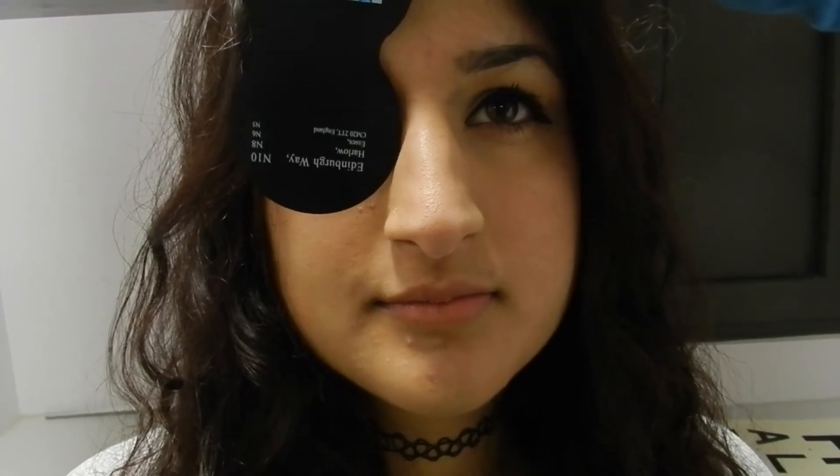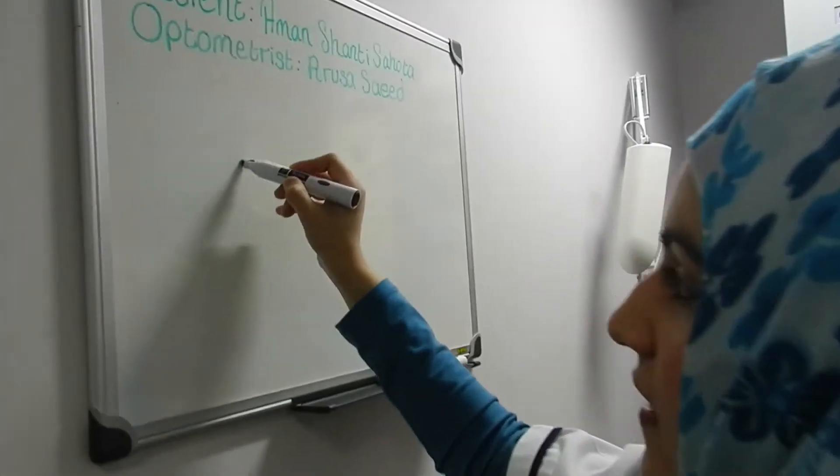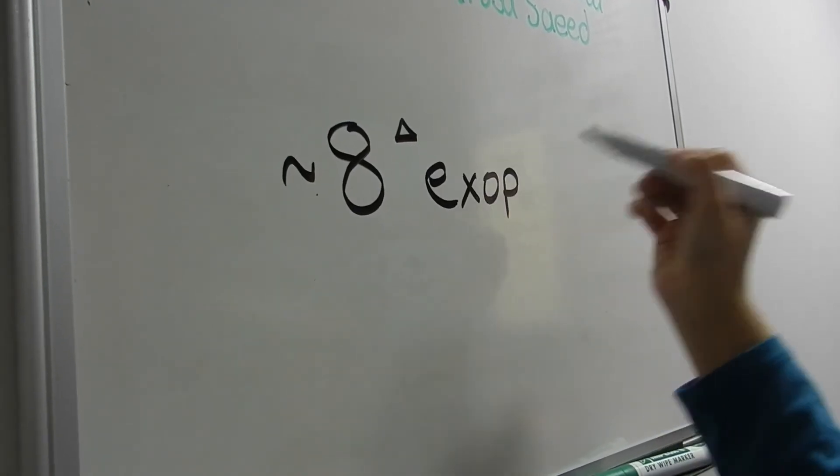This time I'm going to do the alternating cover test — covering the left eye, then the right eye — to see how big the phoria is. I don't want the patient to see binocularly at any point. The movement is quite big; I would say about eight prism diopters and it's an exophoria. I'm going to record it as eight prism diopters — eight diopters, exophoria, with a quick recovery.